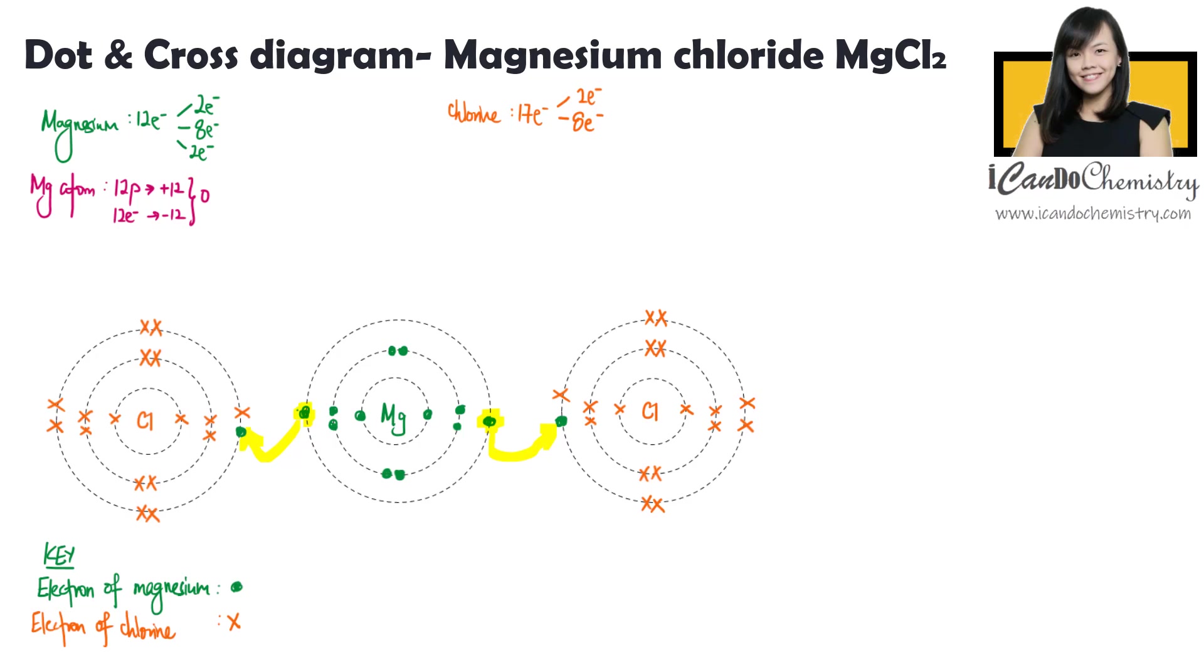When magnesium gives away its electrons to the non-metals, the number of protons remains unchanged. Hence the positive charge is still +12. However, there are only 10 electrons left, so the negative charge is -10. Overall charge of this ion is +2. We need to represent this charge in the dot and cross diagram by putting the bracket and the charge.